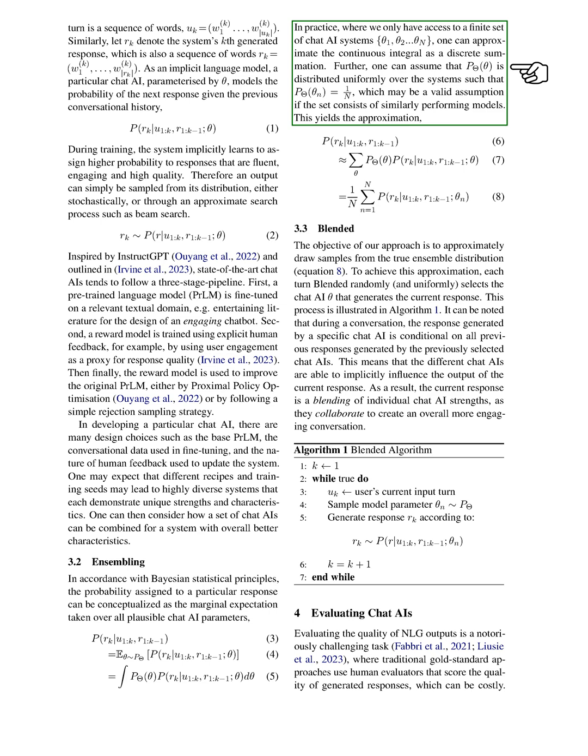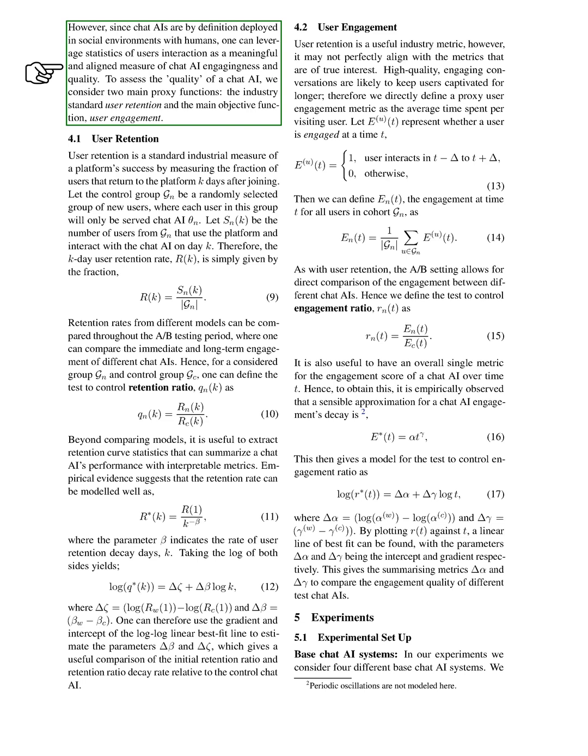Evaluating the quality of chat AIs is a challenging task. Traditional approaches use human evaluators to score the quality of generated responses, which can be costly. However, since chat AIs are deployed in social environments with humans, we can use statistics of user interaction as a measure of chat AI engagingness and quality. User retention is a standard measure of a platform's success, measuring the fraction of users that return to the platform K days after joining. We can compare retention rates from different models throughout the A-B testing period, allowing us to compare the immediate and long-term engagement of different chat AIs. Beyond comparing models, it's useful to extract retention curve statistics that can summarize a chat AI's performance with interpretable metrics. Empirical evidence suggests that the retention rate can be modeled well as a function of the number of days, K. We can use the gradient and intercept of the log-log linear best fit line to estimate the parameters, which gives a useful comparison of the initial retention ratio and retention ratio decay rate relative to the control chat AI.